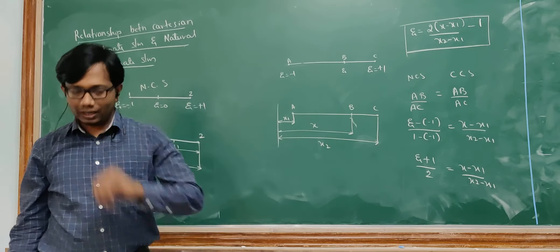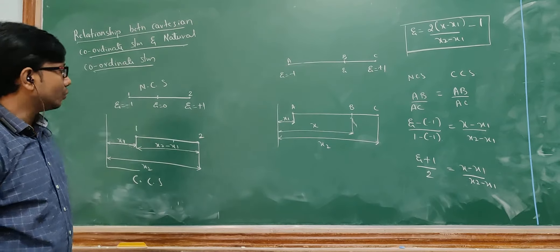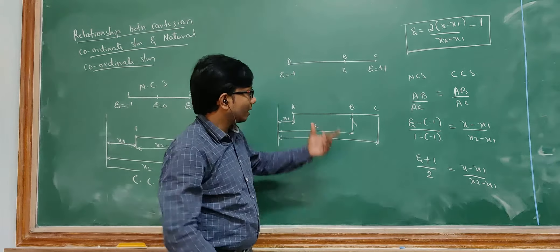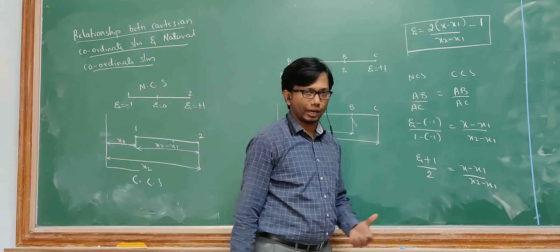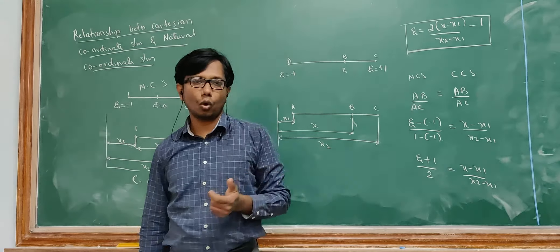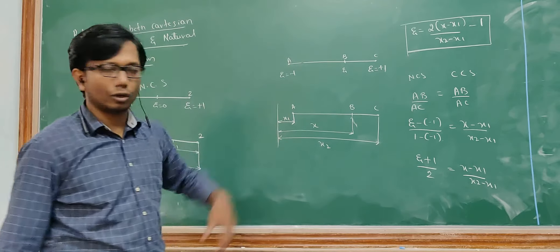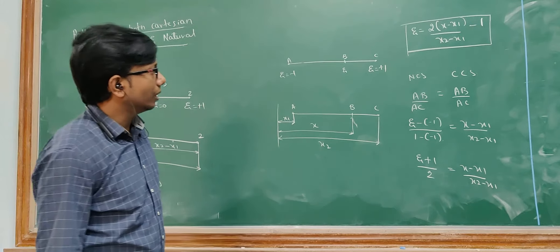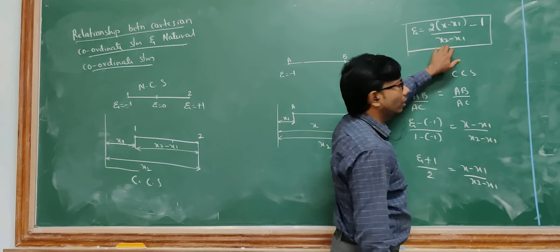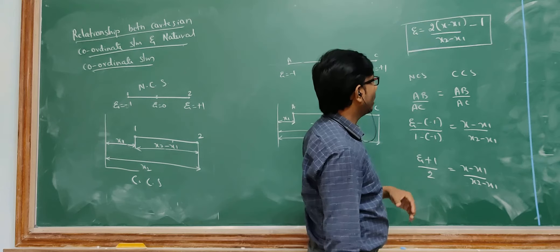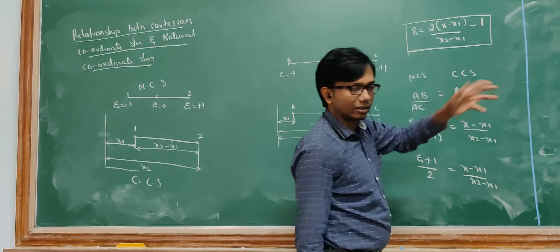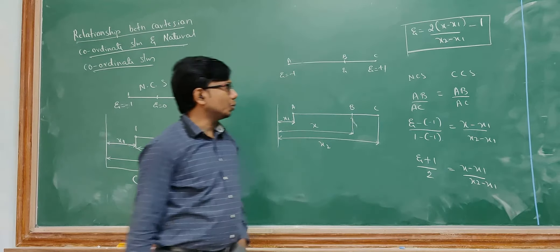The advantage of the natural coordinate system is that it is very easy to integrate. Whenever you find a Cartesian coordinate term, you can use this relationship to replace it using the natural coordinate term zeta. It is necessary to understand and remember this relationship because it is very much used in the derivations we will be doing next.